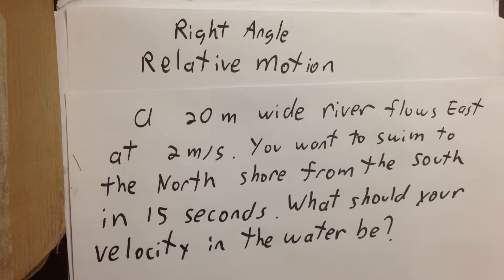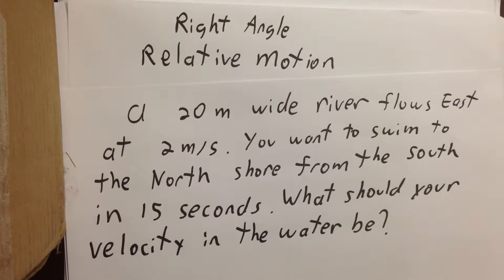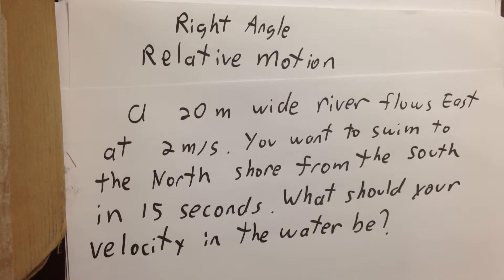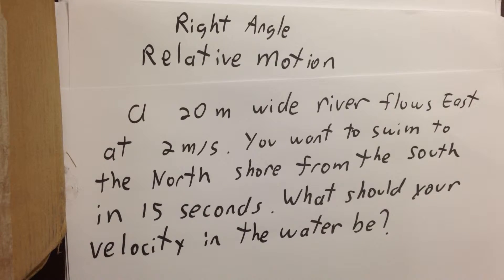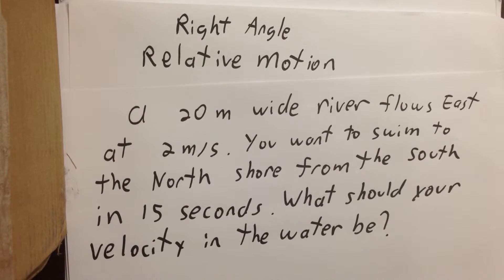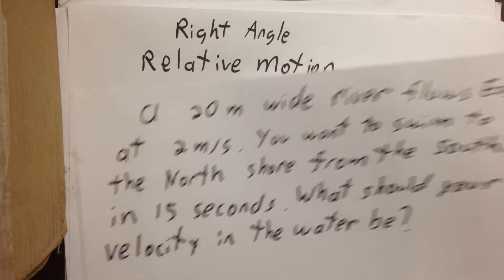We're doing a right angle relative motion question. There's a 20-meter wide river that flows directly east at 2 meters per second. You want to swim to the north shore from the south in 15 seconds. What should your velocity in the water be? Let me draw a picture based on this description.